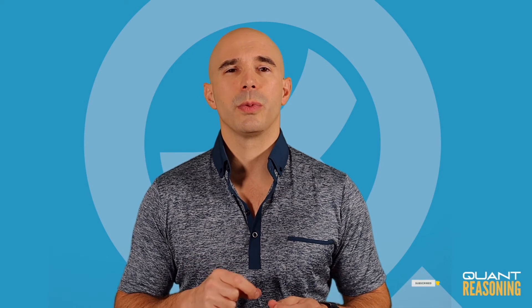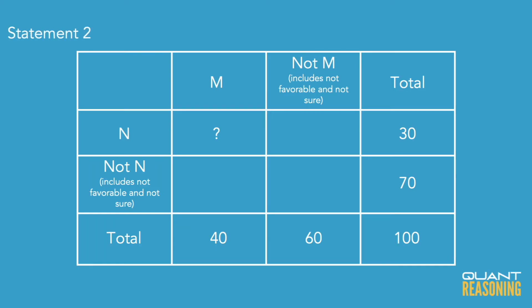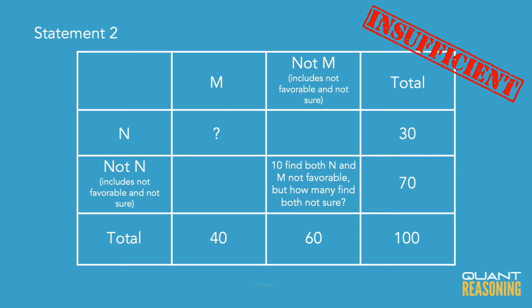Statement 2 talks only about the number of people who thought the candidates were unfavorable, but we don't know how to digest that in the context of people who were not sure. We decided to treat not favorable and not sure as one category. The minute you separate them into two distinct categories and only give information about one of them, all bets are off — I know how many find them not favorable, but how many are not sure? I have no idea. So there's no way to infer the number of people who find them favorable, and Statement 2 is not sufficient on its own.